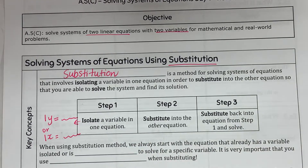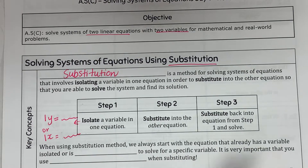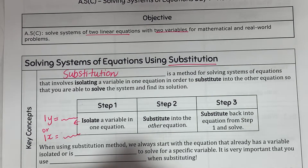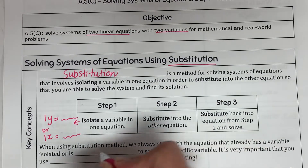When using the substitution method, we always start with the equation that already has a variable isolated, or is easiest to solve for a specific variable.